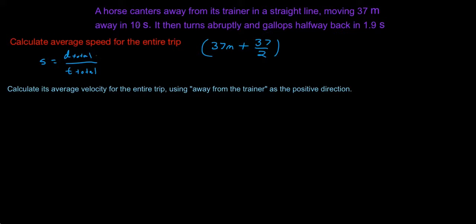The first 37 took 10 seconds, and the other 37 over 2 took 1.9 seconds. So our time total would be 1.9 plus 10 seconds, and this is meters. So meters over seconds would give us speed. And if you calculate all that in your calculator, you'll get 4.7 meters over seconds. That would be your answer.